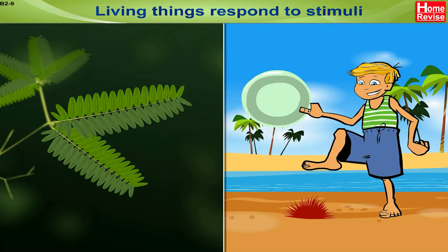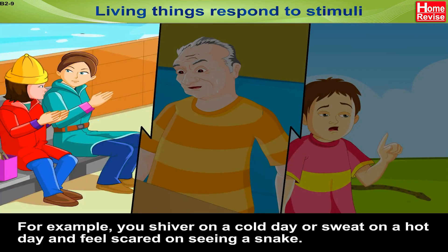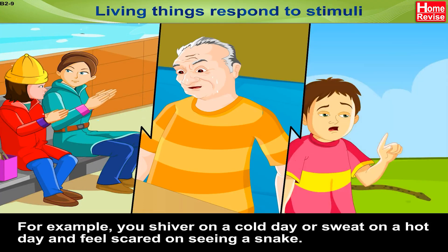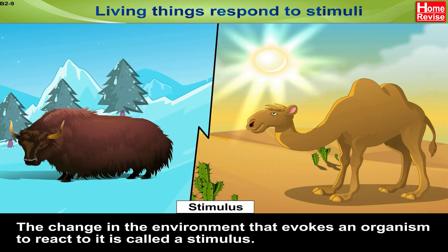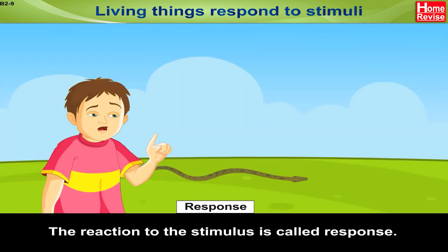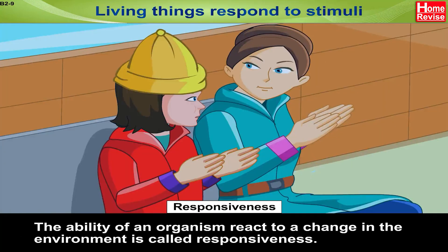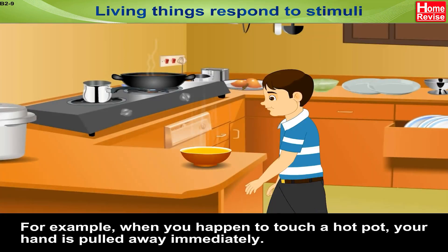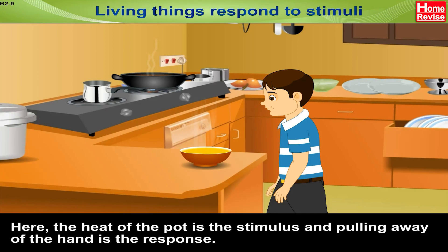Living things respond to stimuli. All living organisms, be it plants or animals, react to changes in their surroundings. For example, you shiver on a cold day or sweat on a hot day and feel scared on seeing a snake. The change in the environment that evokes an organism to react to it is called a stimulus. The reaction to the stimulus is called response. The ability of an organism to react to a change in the environment is called responsiveness. For example, when you happen to touch a hot pot, your hand is pulled away immediately. Here, the heat of the pot is the stimulus and pulling the hand away is the response.